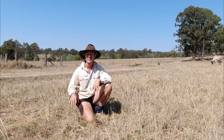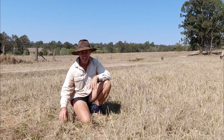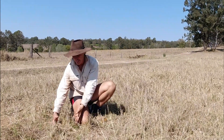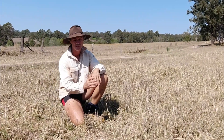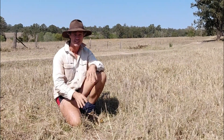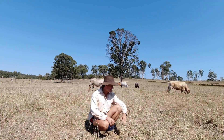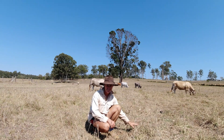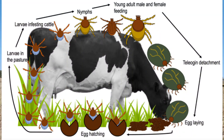At that stage they're known as the non-parasitic stage. Once they've hatched, they clamber up to the top of the grass, waiting for a beast to walk past before jumping onto that animal. It's early spring, the weather's warmed up, and they've clambered up to the top of the grass and jumped onto passing livestock — in our case, cattle.